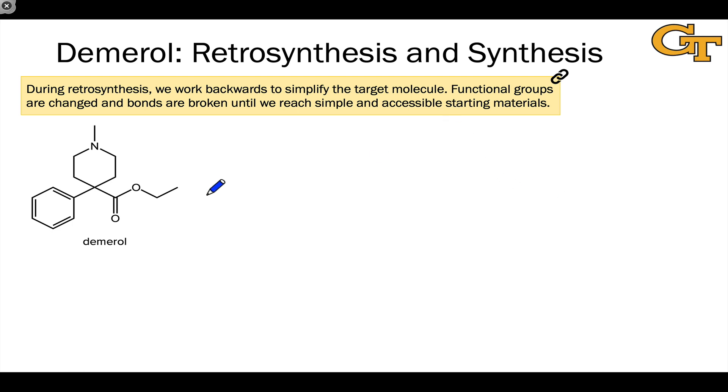So, let's start with the target. This is Demerol. One of the first things we should really do is take stock of the functional groups we find within the molecule. We see an ester here—there's an ethyl ester in the molecule. There's an amine, a cyclic amine, part of a six-membered ring, and there's a benzene ring or a phenyl ring in this structure.